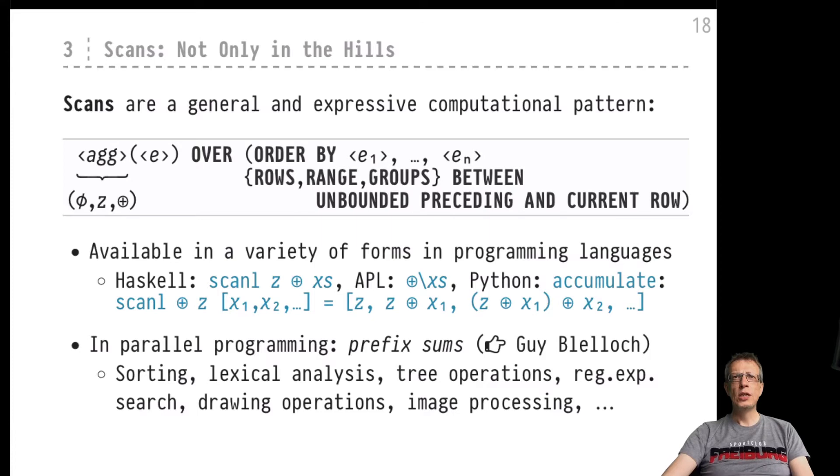There are programming languages around which even come with either predefined or library defined operations or operators that perform scans. So the computation that we are performing above here could in Haskell be expressed using the scanl function. The scanl function's over an ordered list of values. We don't have ordered list of values in SQL, but what we have is tables that we can order by given criteria. And that would be our replacement of an ordered list in Haskell.